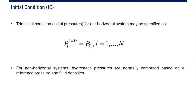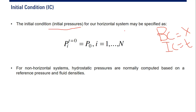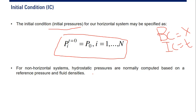We have talked about boundary conditions — which apply to location x. For time, we have the initial condition. We need both boundary conditions and initial conditions. The initial condition in this case is the initial pressure. For a horizontal system, it may be specified as: initial pressure at time equals zero is P_zero, at any location i from 1 to n. For non-horizontal systems, hydrostatic pressure is normally computed based on a reference pressure and fluid densities.